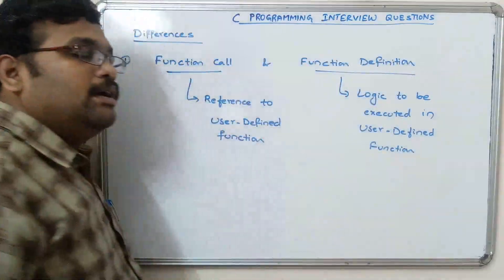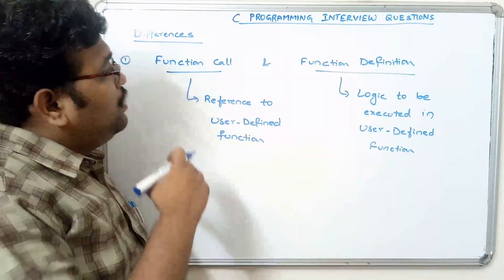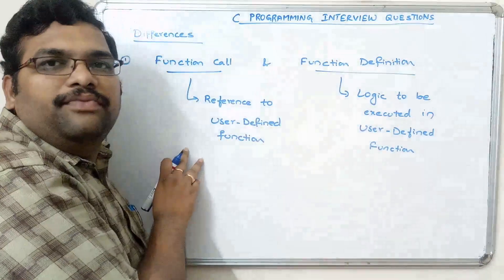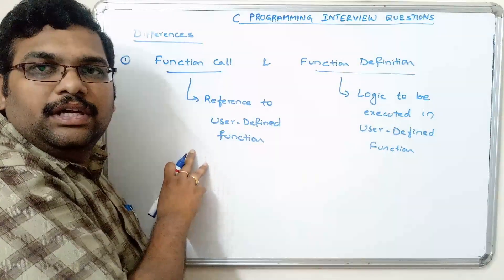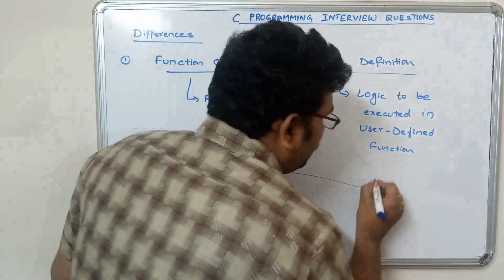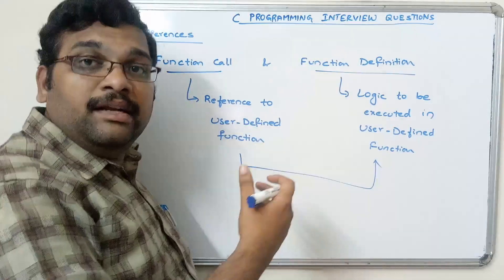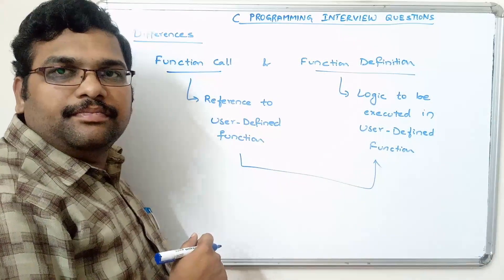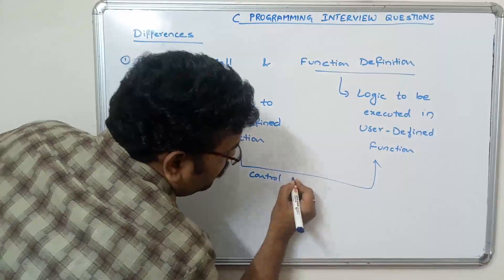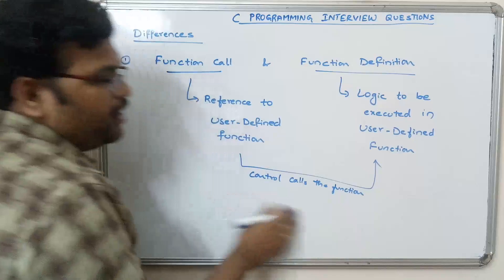Actually, in order to reduce complexity, we write these functions. We have to write the reference of this particular logic in the calling function, the parent function. Whenever the control executes this function call, automatically the control will move towards this function definition.